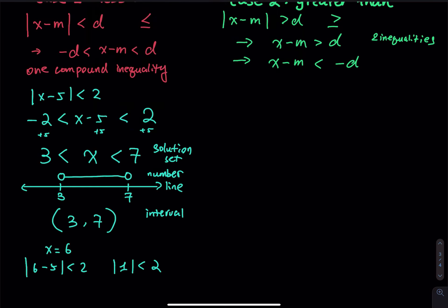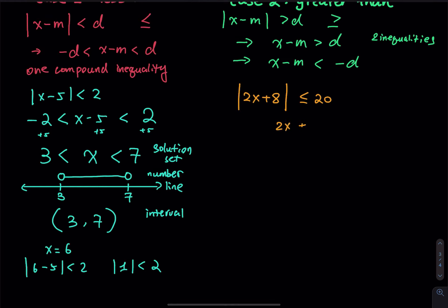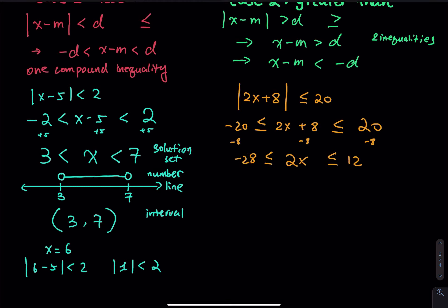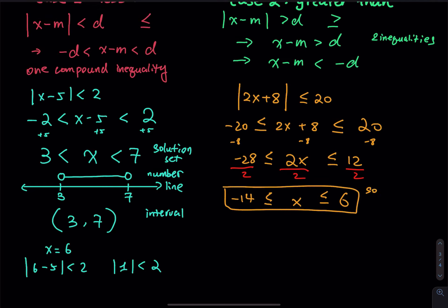The next example: the absolute value of 2x plus 8 less than or equal to 20. Write the compound inequality: 2x plus 8 is between negative 20 and 20, with the equal included. Subtract 8 from each side — in the middle you have 2x; 20 minus 8 is 12; negative 20 minus 8 is negative 28. Then divide each side by 2. You get x between negative 14 and 6, inclusive. This is your solution set — a set of numbers between negative 14 and 6, including negative 14 and 6.